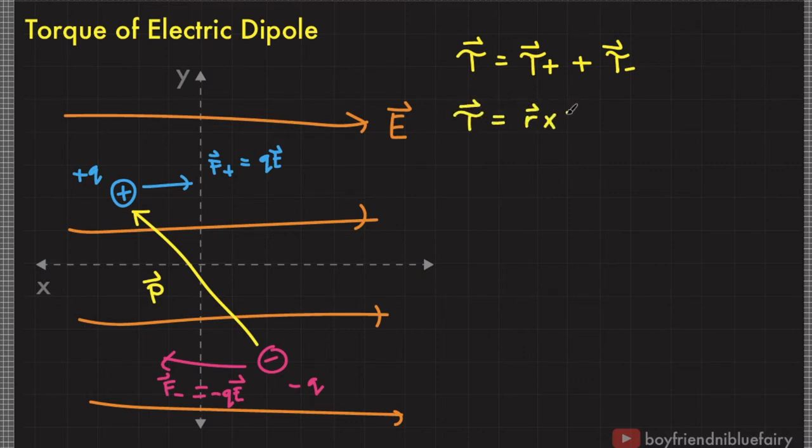Substituting the definition of torque, we have this equation. Note that the arm R here is actually d over 2, and the force here is represented by charge times electric field.